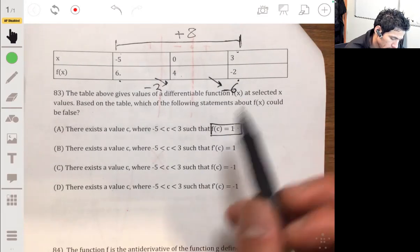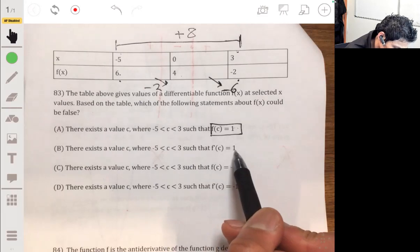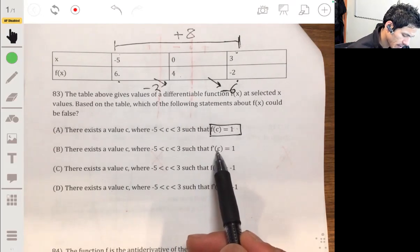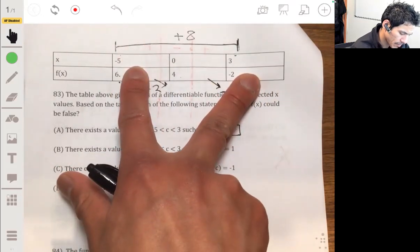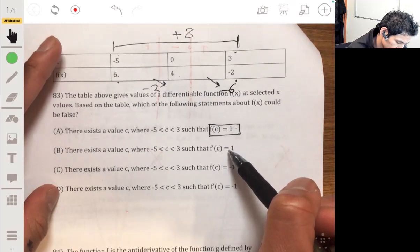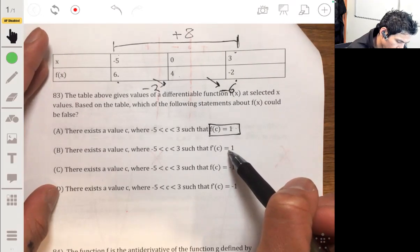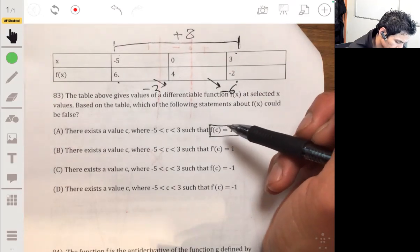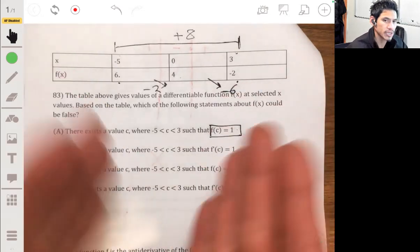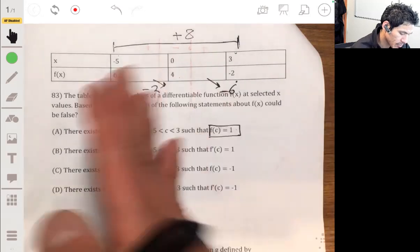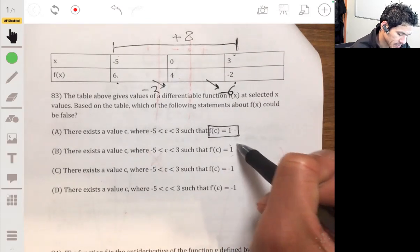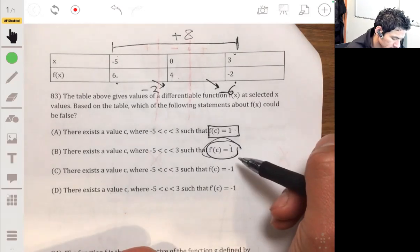Option B: there exists a value c such that f prime of c is one. Okay, so this is saying that there has to be an x value between the endpoints such that the derivative is going to be one or the slope is one. This is possible to be false because unless we see a rate of change that's going to be one at some point, like the average, the mean value theorem, then we can't say for sure that this is possible. So this could be false. This doesn't have to be true because this is not requisite.